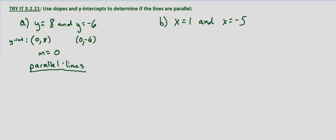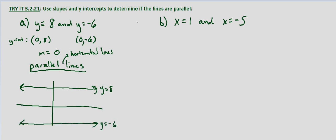And technically let's go ahead and add this in here: parallel horizontal lines. And if we graphed them, I'm not going to make an accurate scale here, but we'd have y equals 8 somewhere up here as a horizontal line. And y equals negative 6 somewhere down here as a horizontal line. And they are parallel. All horizontal lines are parallel unless they represent the same line, and in that case they would be equal to the same number.